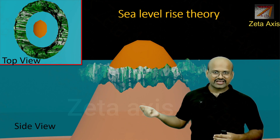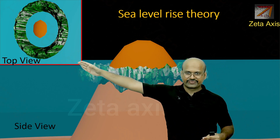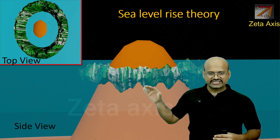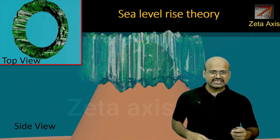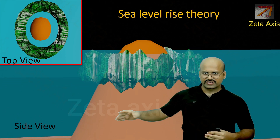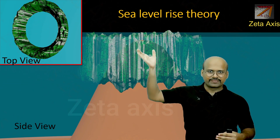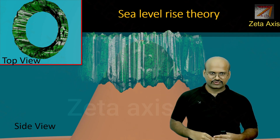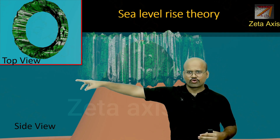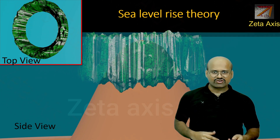The second theory is the sea level rise theory. Again, a mountain has reefs starting as fringe reef and becoming a barrier reef. Instead of the mountain sinking, the sea level rises, submerging the mountain. The corals develop upward to remain close to the water surface for survival, forming a ring of coral — giving rise to the atoll.